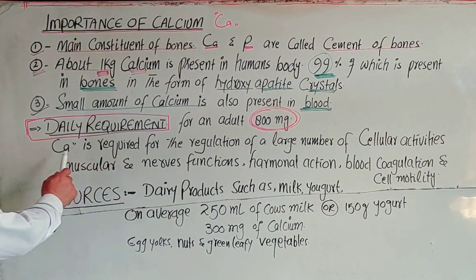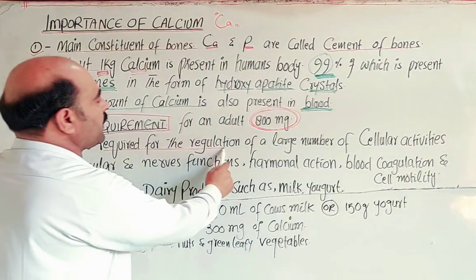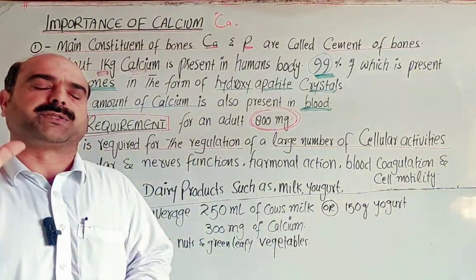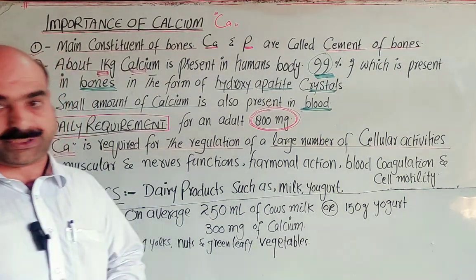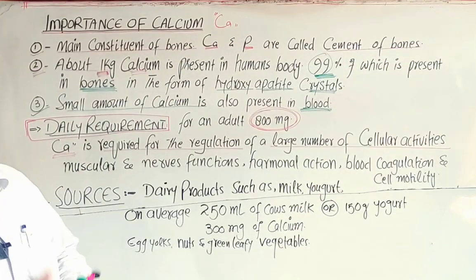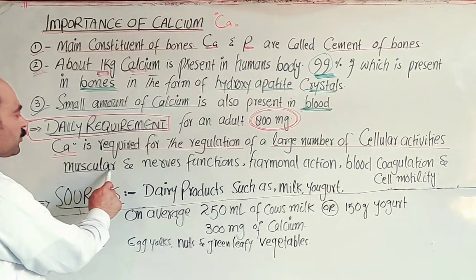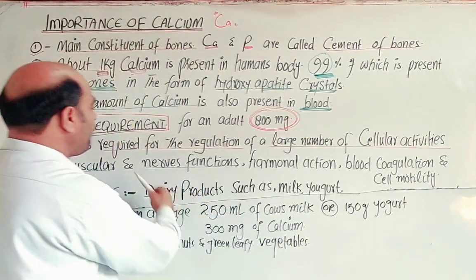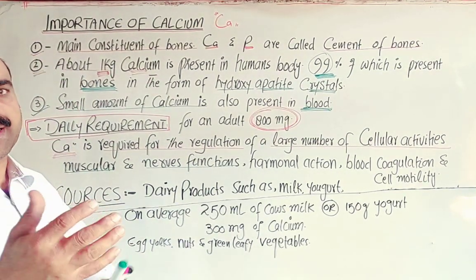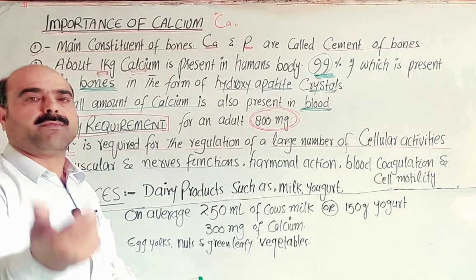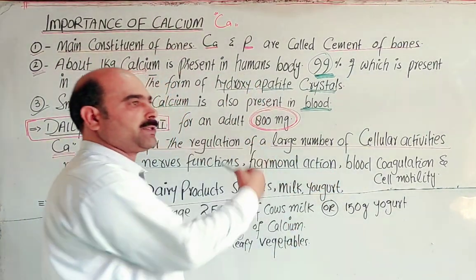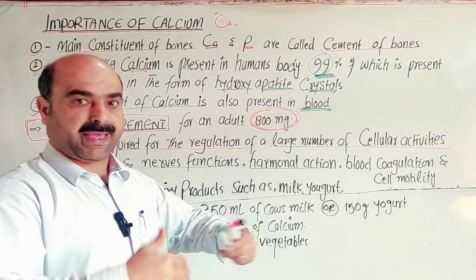Calcium is required for the regulation of a large number of cellular activities and cellular functions. Calcium plays a role in speeding up, regulating, and normalizing these functions. For example, muscular functions such as contraction and relaxation, and nervous system functions involving sensory, motor, and associative neurons receiving and forwarding signals.